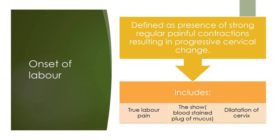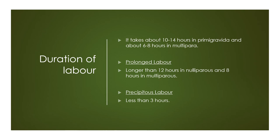True labor involves regular, painful, progressive uterine contractions with cervical dilatation and effacement, which is not present in false labor. Active labor in a primigravida lasts 10 to 12 hours and in multigravida 6 to 8 hours. If labor exceeds 12 hours in nullipara or 8 hours in multipara, it is prolonged labor. If the entire process from onset to delivery of placenta occurs within 3 hours, it is precipitated labor.